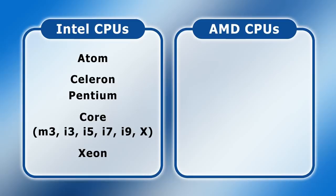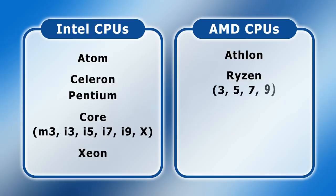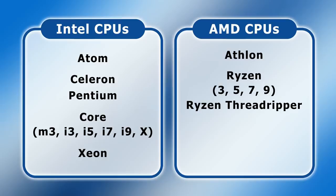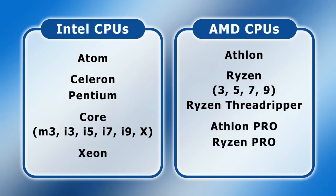On the AMD side, the range starts with their lower-end Athlon chips, after which we get to their more powerful Ryzen family with its Ryzen 3, Ryzen 5, Ryzen 7, and Ryzen 9 members. Next and even more powerful are the Ryzen Threadripper chips. And finally things are topped off with the Athlon Pro, Ryzen Pro, and EPYC families aimed at the workstation and server market.